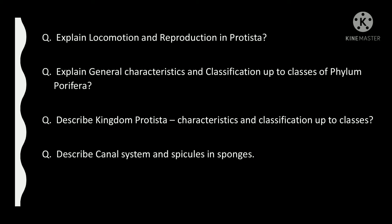We have to describe locomotion and reproduction in Protista. Then the next question is: explain general characteristics and classification up to classes of phylum Porifera. Then describe kingdom Protista — its characteristics and classification up to classes. Then: canal system and spicules in sponges.